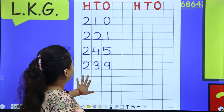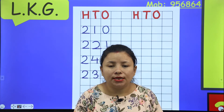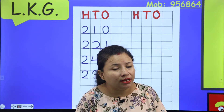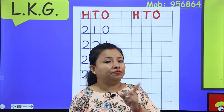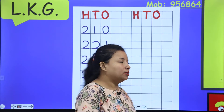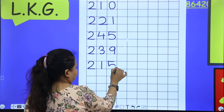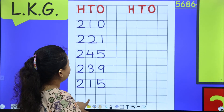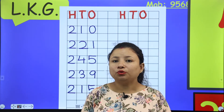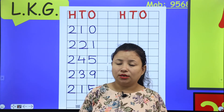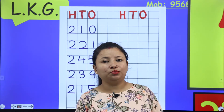Now number five is two hundred fifty-nine. Fifty-nine means five in the tens and nine in the ones. So two hundred fifty-nine — 259. Number six is two hundred two: two hundred means two, zero in the tens, and again two — two hundred two, 202.